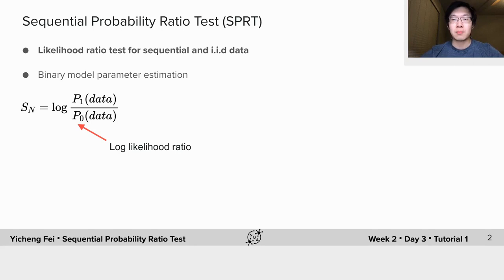If Sn is greater than zero, we use P1 as our estimation. If Sn is smaller than zero, we use P0. Otherwise, we flip a coin.